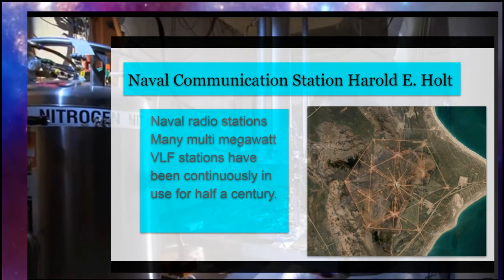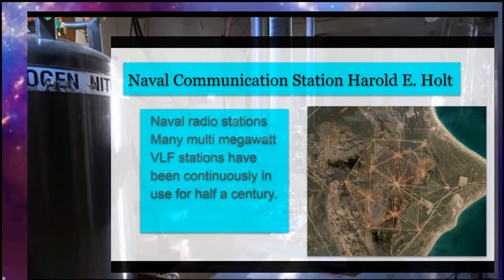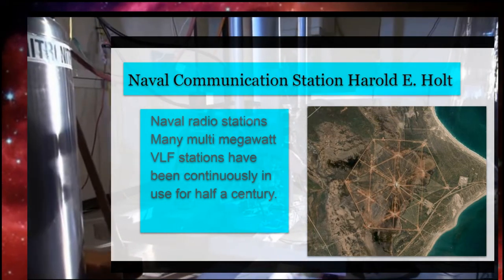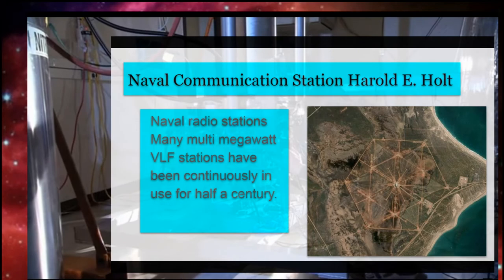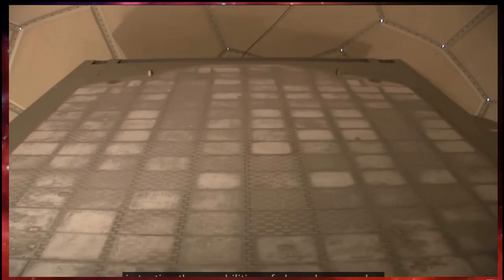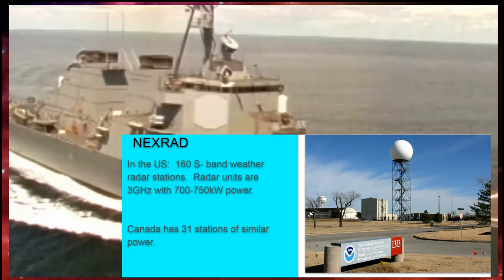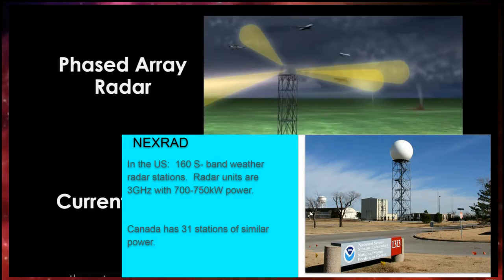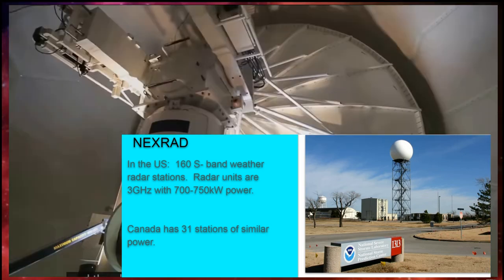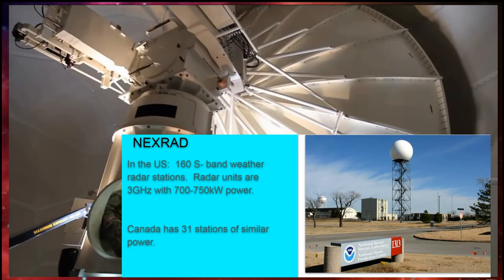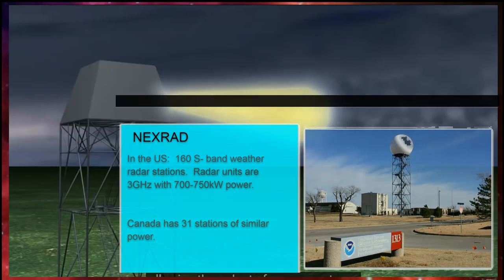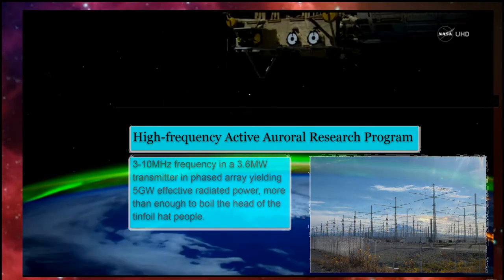Navy communications, especially for subs, uses the VLF frequencies, and they are multiple megawatt transmitters, and they've been in use since the 1950s. Now, VLF doesn't get out of the atmosphere as good as some of the others, but it still gets out of the atmosphere. Weather radar. There are more than 160 S-band weather radar stations in the U.S. With Canada thrown in, that's nearly 200 radar stations at around 700 kilowatts each.